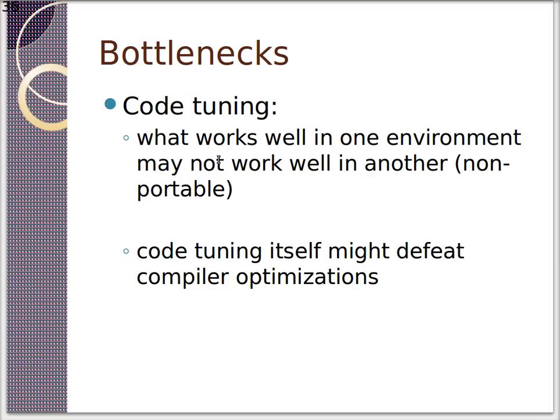So for bottlenecks code tuning, furthermore what works well in one environment may not work well in another. Not all tuning is portable. Another environment might have more data, less data, more memory, less memory, more cores, less cores, faster disk, slower disk, different operating system, different amount of cache, different number of CPUs, anything like that. So code tuning might defeat, might hurt one environment and help another. Furthermore, your tuning might confuse the compiler, and it might defeat the compiler optimizations. If it knows you code in a certain way, it might be able to take advantage of that.